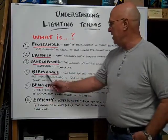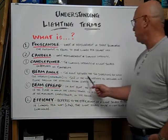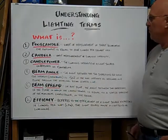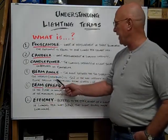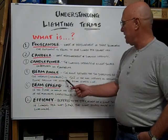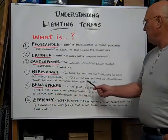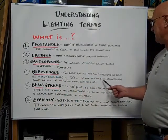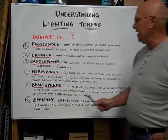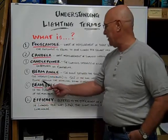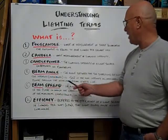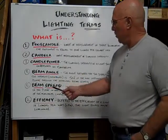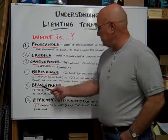Beam angle is the angle between the two directions for which the intensity, or the candle power, is 50% of the maximum intensity as measured in a plane through the nominal beam center line. What is beam spread?